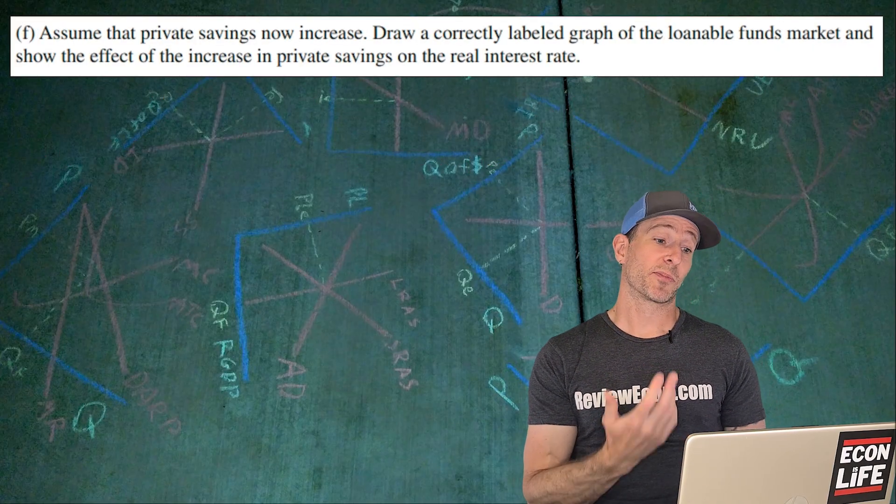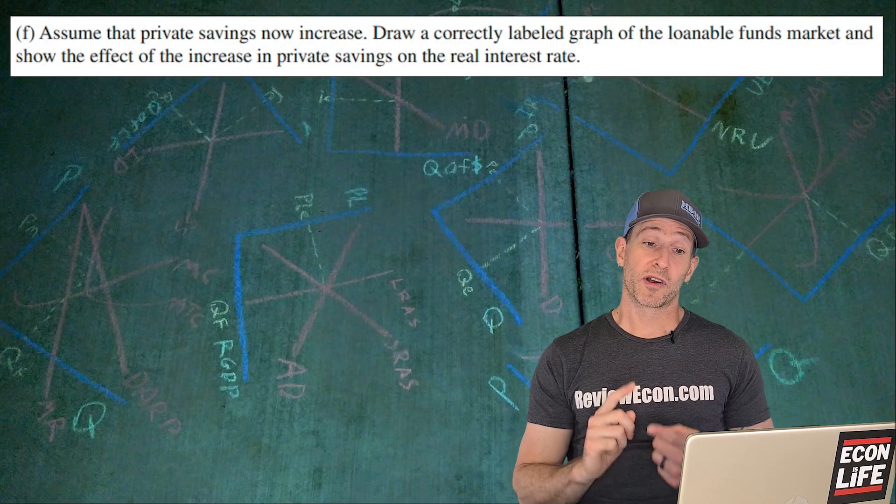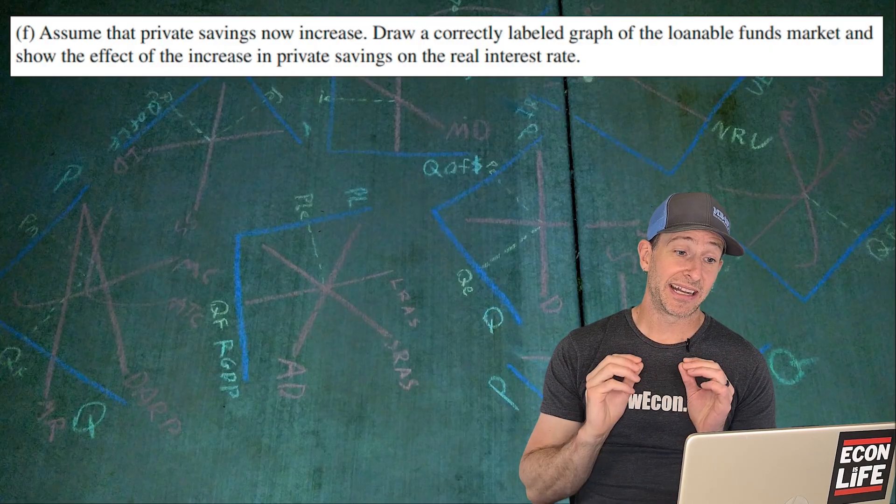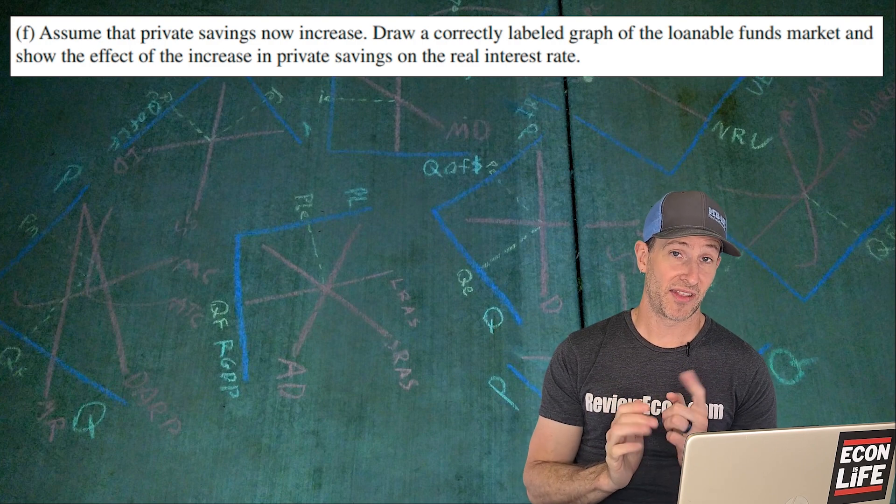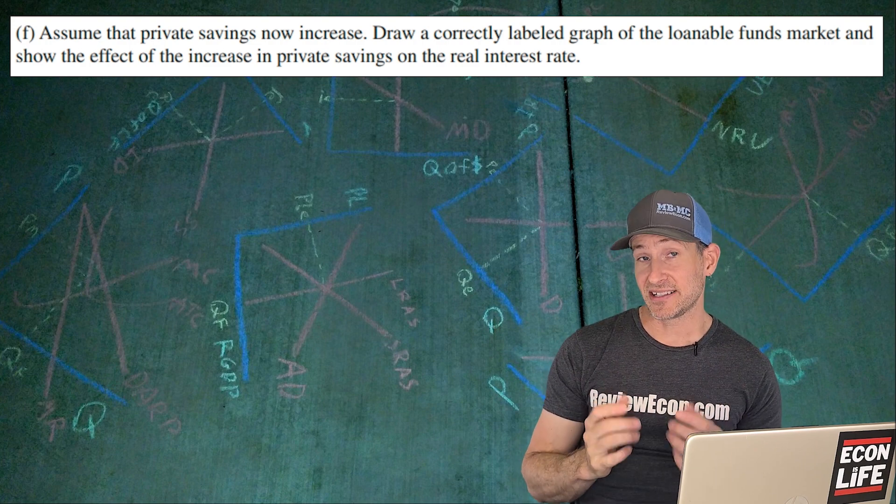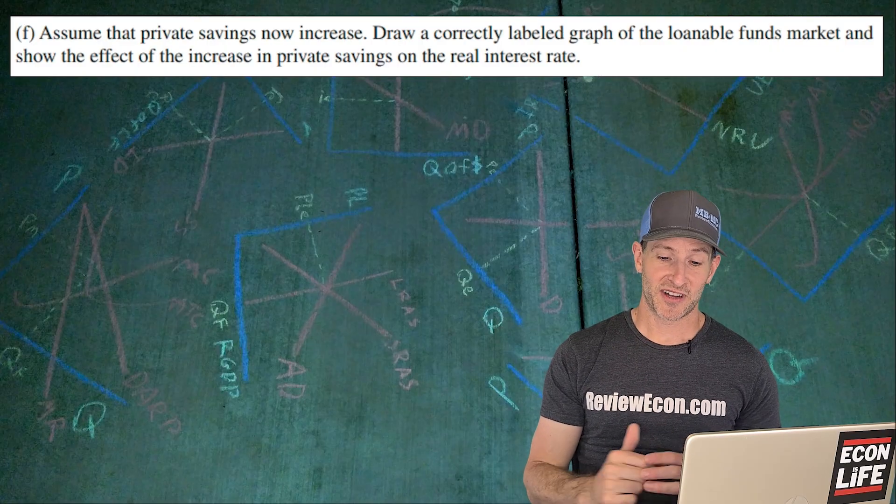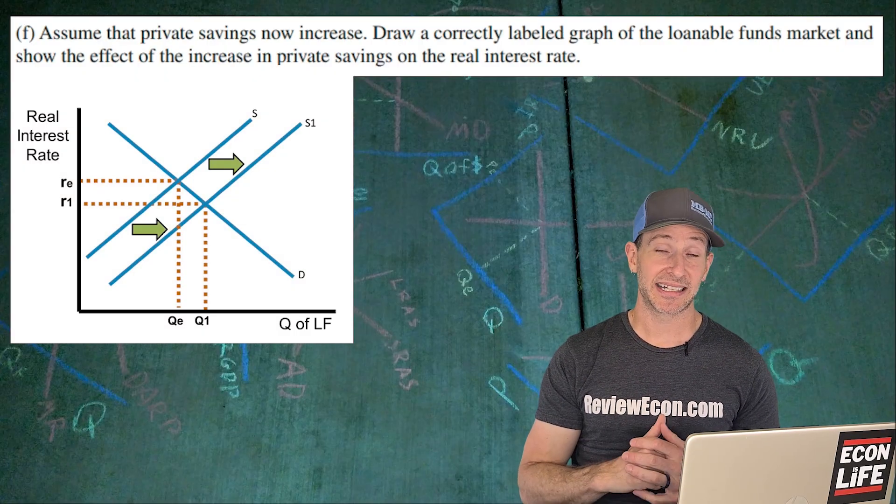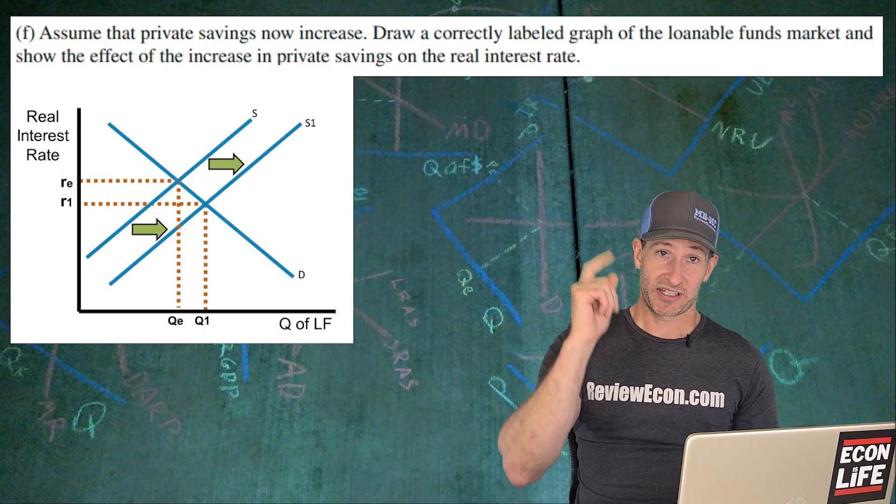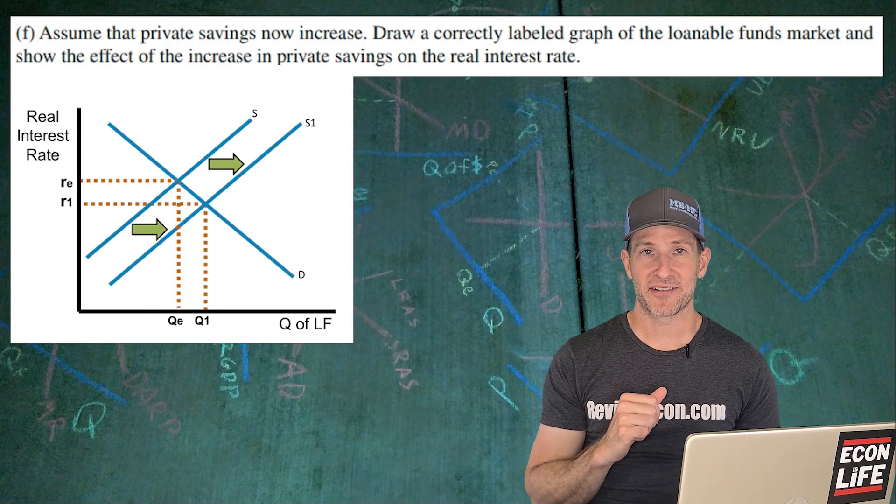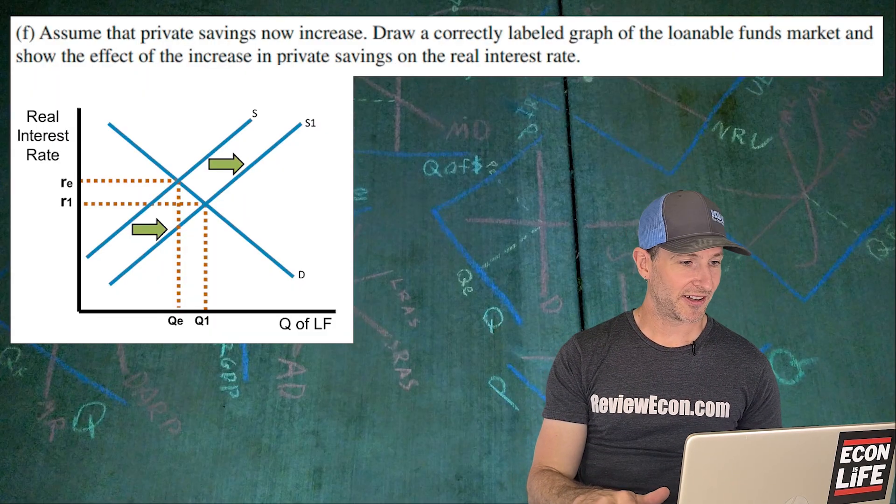Now we're going to assume that the private savings rate increases. We're going to draw a loanable funds market graph and show the impact of an increase in private savings on that interest rate. So savings are the supply curve in the loanable funds market. We're going to see an increase in that savings supply. That's going to lower the real interest rate in that loanable funds market.